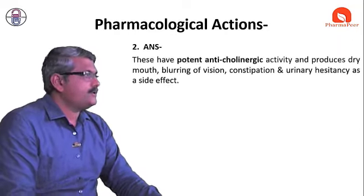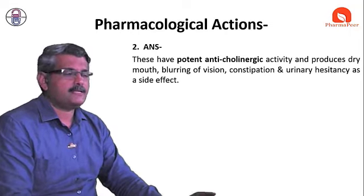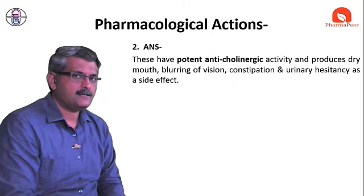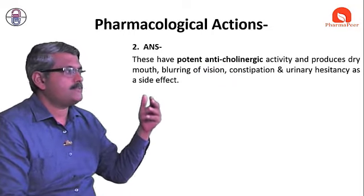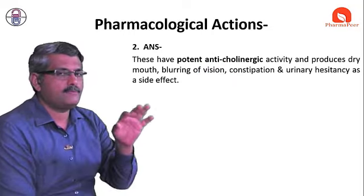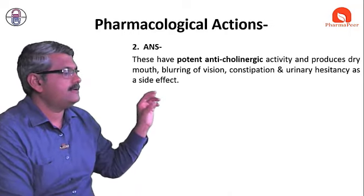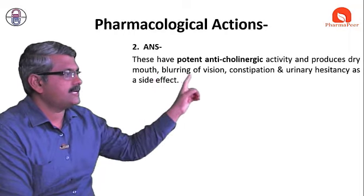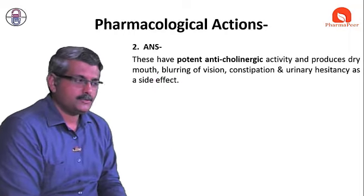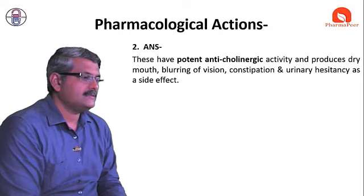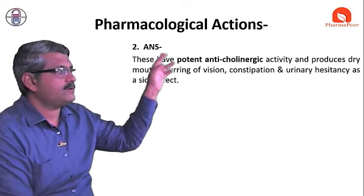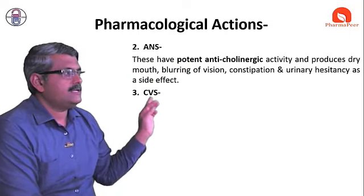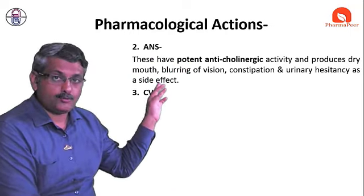With respect to the autonomic nervous system, tricyclic antidepressants have an important anticholinergic effect — similar to atropine. This results in dryness of the mouth, blurred vision, constipation, and urinary hesitancy. These are side effects due to the anticholinergic action.